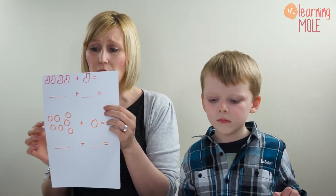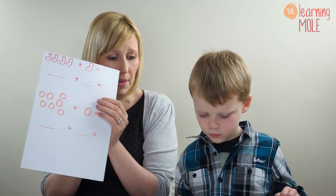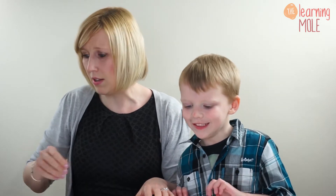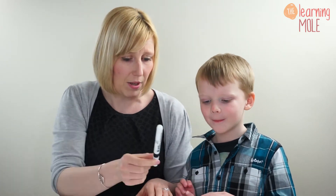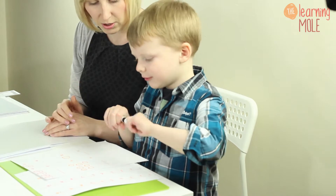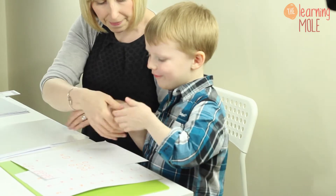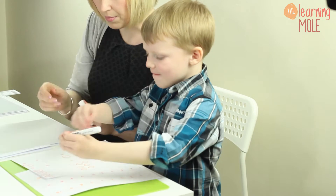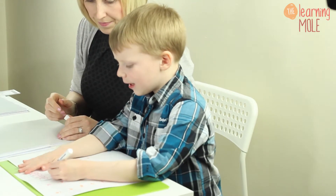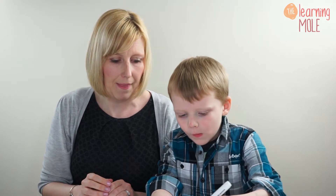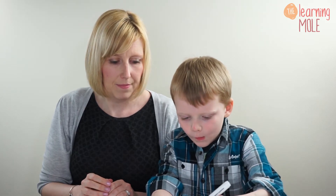So Aaron, what I'm going to ask you to do this time is make me a number sentence using these little pictures. You're going to write the number below it for me. So how many little socks do you have here? Four. Okay, so can you write the number four please? Here, anywhere on the line.